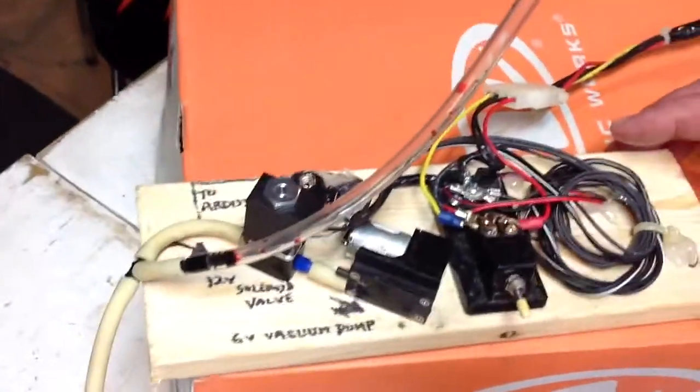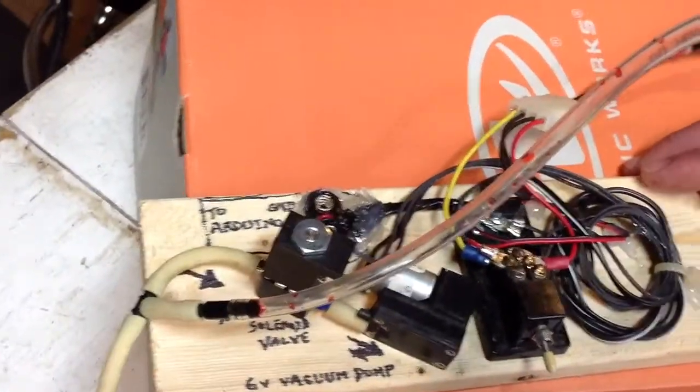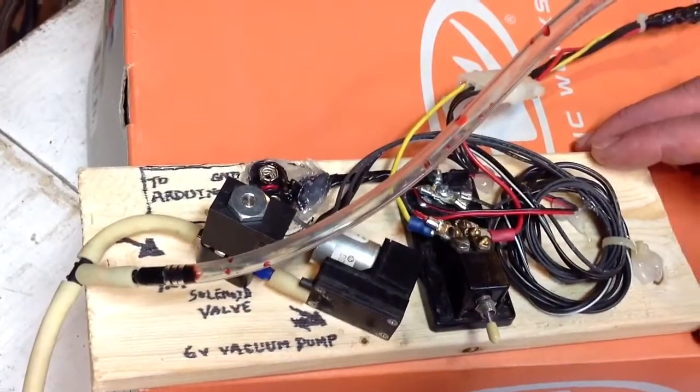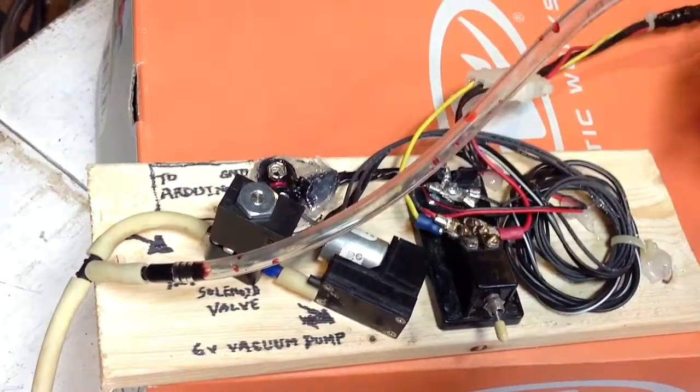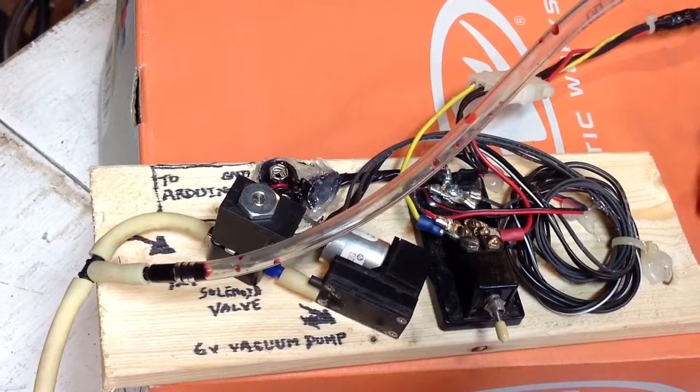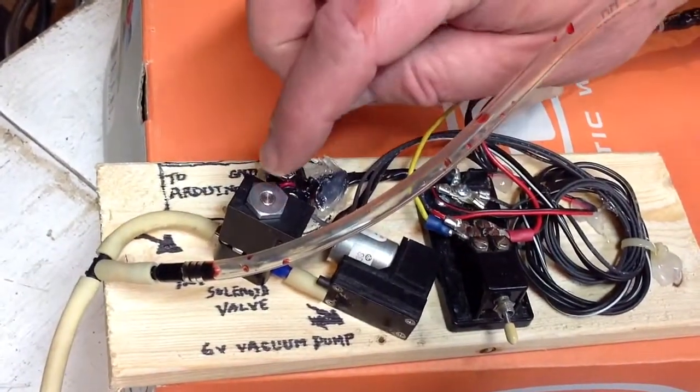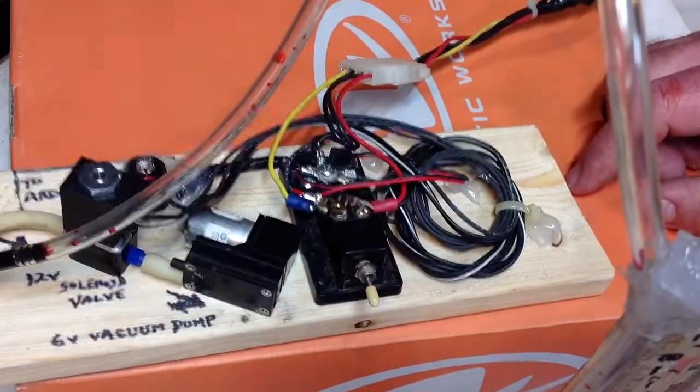In any event, the test rig includes a 12-volt and 5-volt power supply. The 5-volt is going to a small vacuum pump, a combination vacuum and pressure pump. The other is a 12-volt solenoid valve and one switch which controls both at the same time, so it turns on the pump and the solenoid valve.